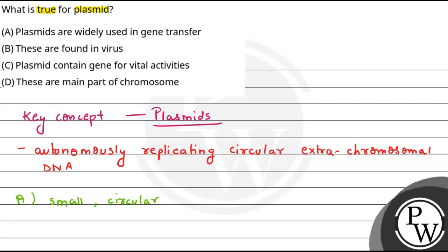They are widely used as vectors. When we use plasmids as vectors, genes can be transferred. That is the reason option A is the true statement.